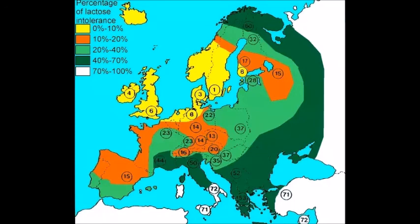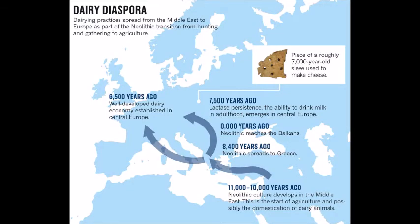One example is lactose tolerance in humans of European descent. For most humans, they lose the ability to metabolize lactose after infancy. But humans of European descent gain the ability to metabolize lactose through adulthood.